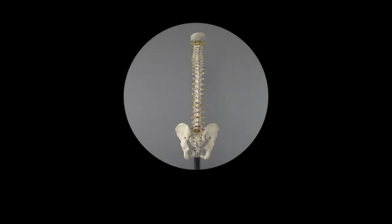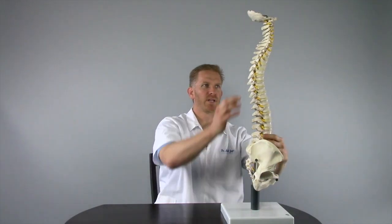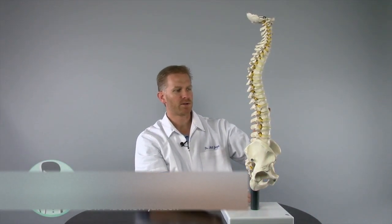Looking at a spine from the front, it should be relatively straight up and down. We call that the coronal plane. From the coronal plane it should be straight. From the side view of a spine in the sagittal plane, there should be a curve and you'll see a three-curve pattern: a lumbar curve, thoracic curve, and a cervical curve.